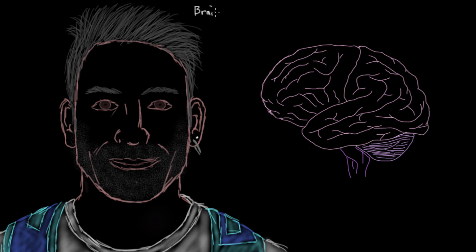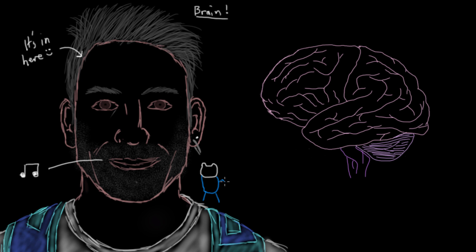Your brain is the most complicated structure in your body. It sits inside your head, protected and housed by your skull, and it's made up of billions and billions of neurons or brain cells. All these neurons are interconnected in a really intricate way that allows you to do things like sing, dance, hear things, smell things, and to think and learn.